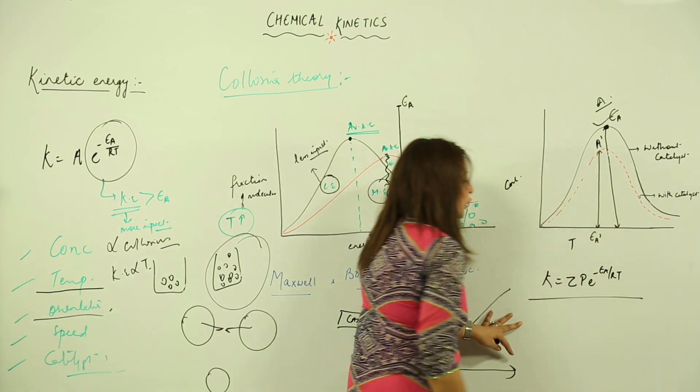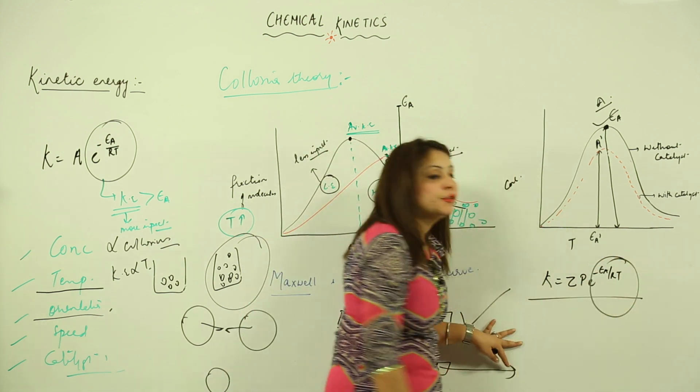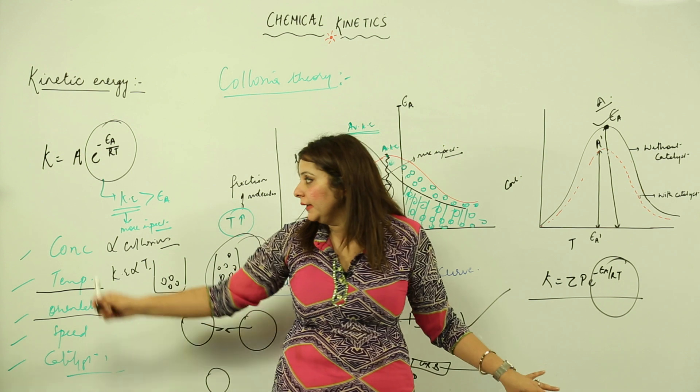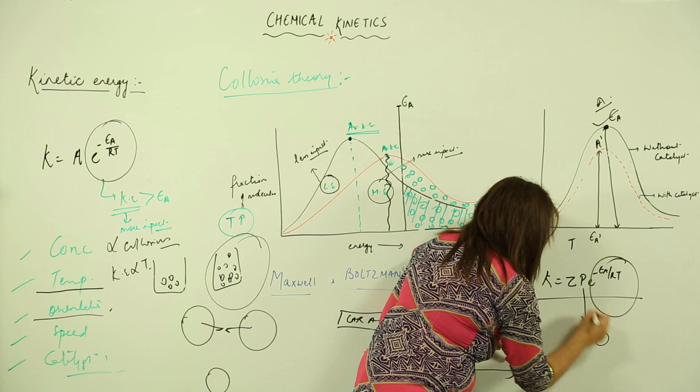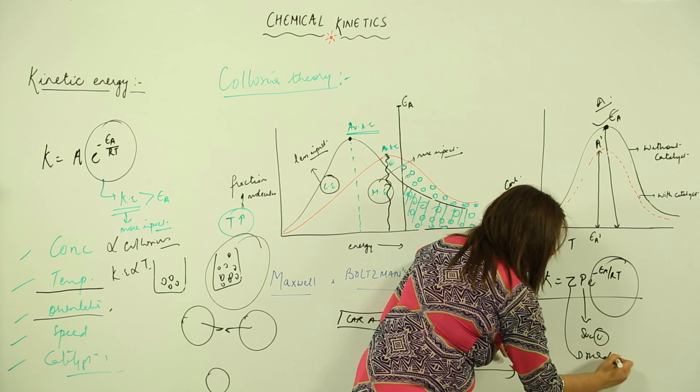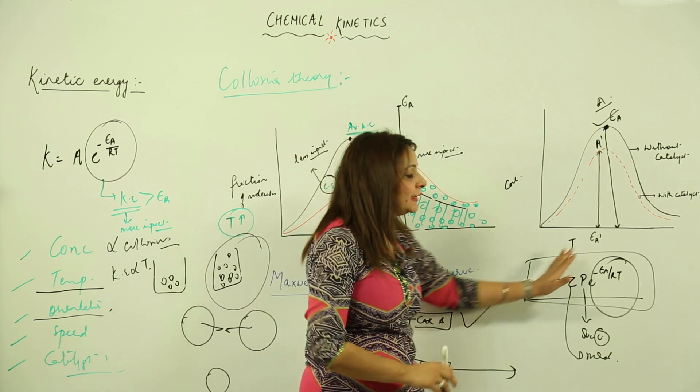to the power minus Ea over RT. This shows the catalytic effect. Z represents the molecules which possess energy greater than the kinetic energy, P is the number of successful collisions, this indicates the medium in which the reaction is occurring, and K is the rate. So the rate is affected by this expression.